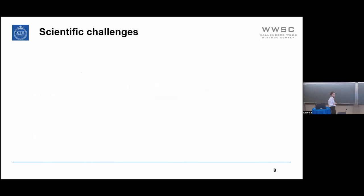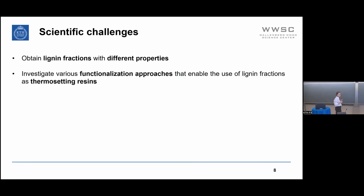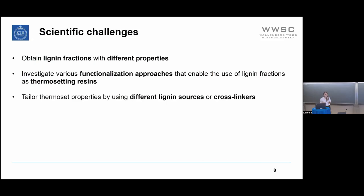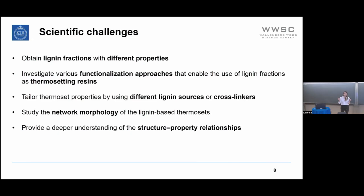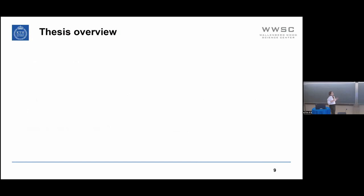The scientific challenges of this work were to obtain lignin fractions of different properties, investigate various functionalization approaches that enable the use of lignin fractions as thermoset ingredients, tailor thermoset properties by using different lignin sources or cross-linkers, study the nanostructure morphology of the lignin-based thermosets, and provide a deeper understanding of the structure-property relationships of these thermosetting materials.